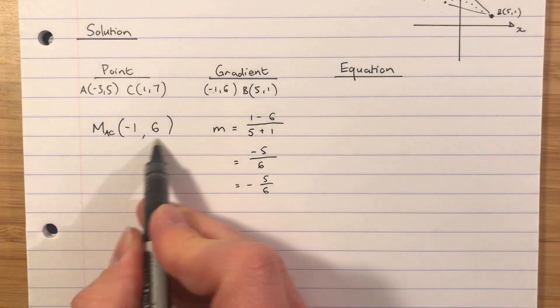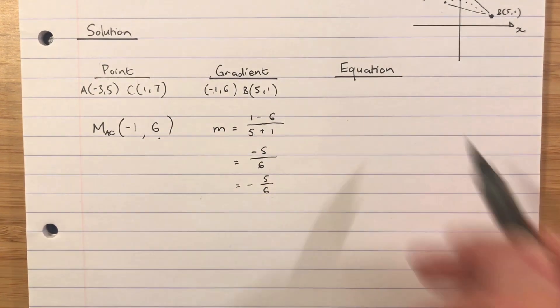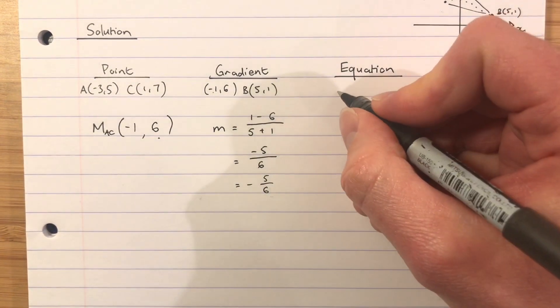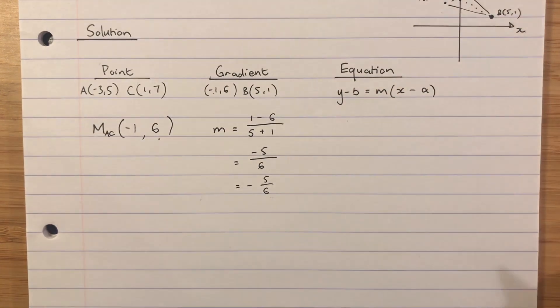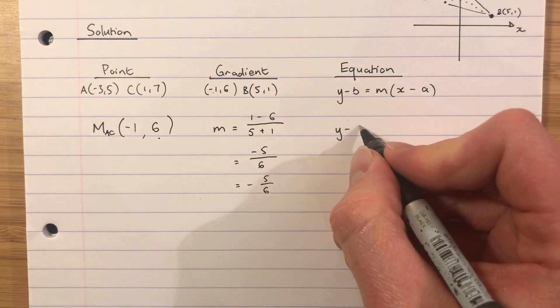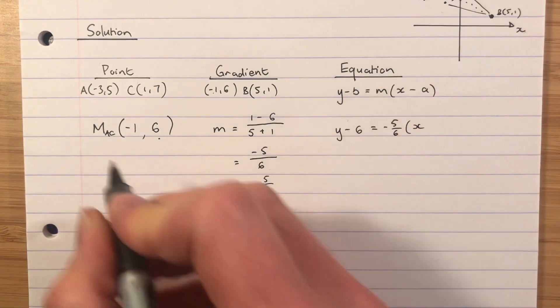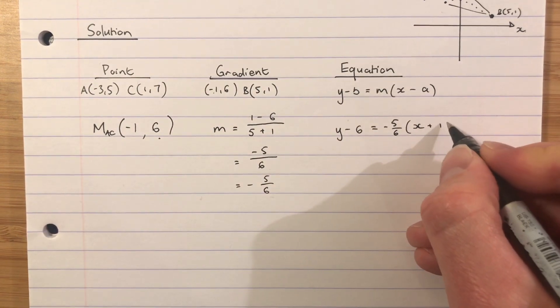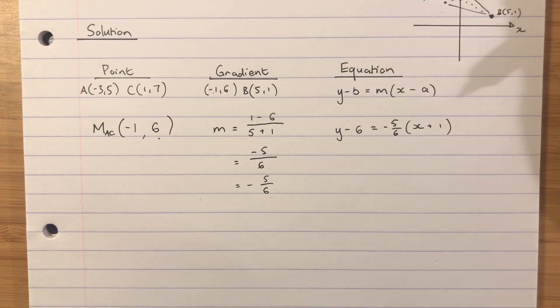I have my midpoint—that's my first mark. I have my gradient—that's my second mark. My third mark is for finding the equation. To find the equation, we are going to use y - b = m(x - a). So subbing into that equation, y - 6 = -5/6(x + 1). It's worth pointing out that for the equation, I can use M or B. I always just use M because it's under the point heading, but you could equally use (5, 1) and get the same answer.